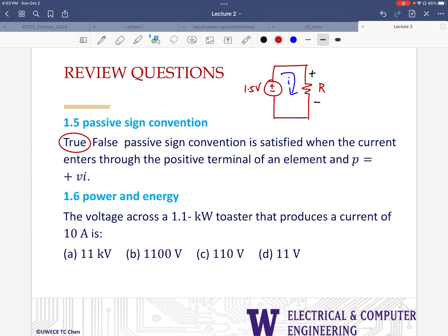Last question, 1.6, power and energy. We are given the wattage of a toaster, 1.1 kilowatts, and the current that is flowing through it is 10 amps. We are asked to find the voltage across the toaster. So the toaster is a power absorbing element, so it's going to be a positive quantity in this case. Let's see if we can calculate that voltage by using the equation for power.